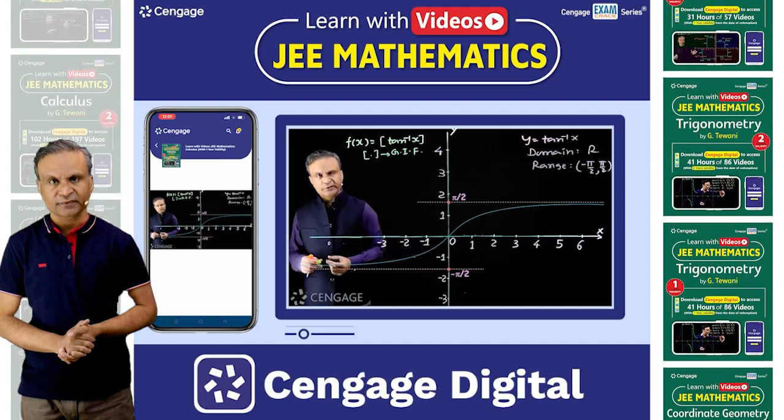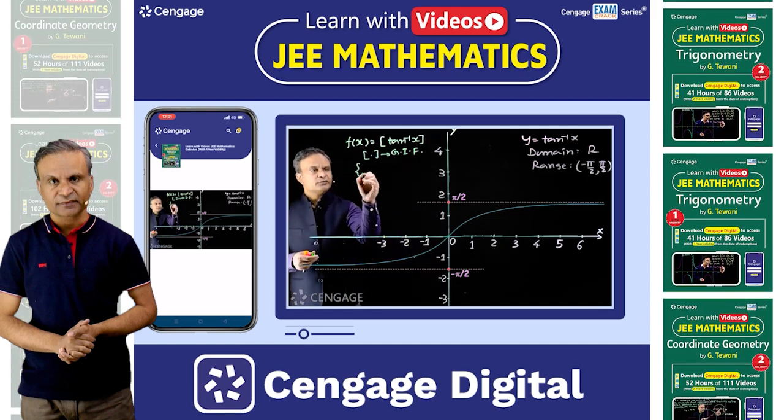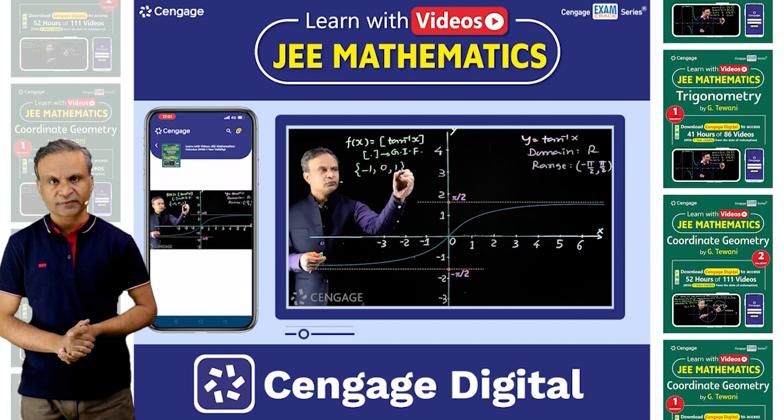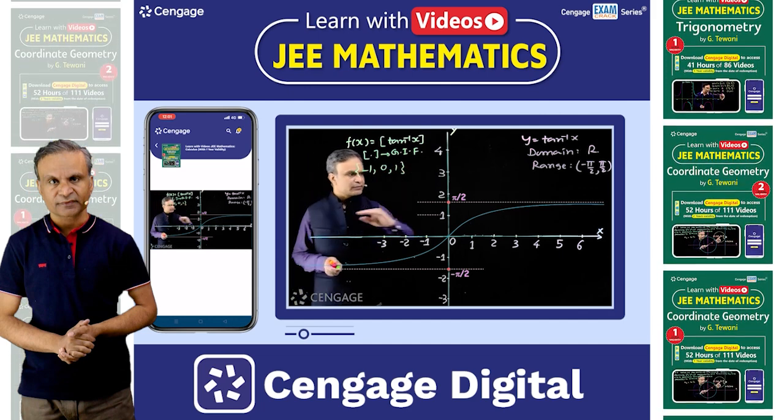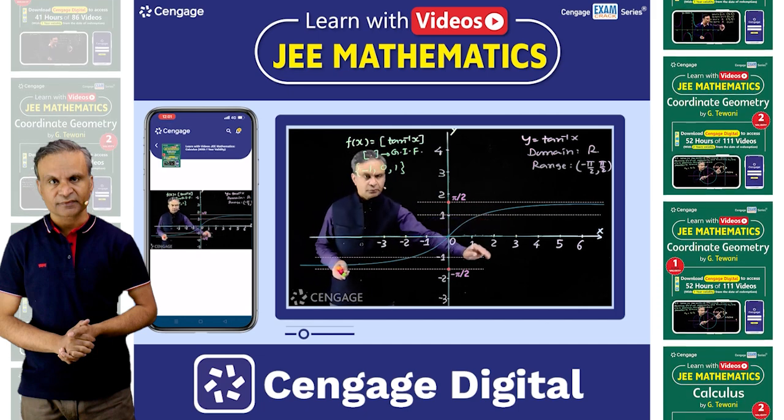What will the integral values be? There will be three integral values: minus 1, 0 and 1. We draw lines y is equal to 1 and y is equal to minus 1.